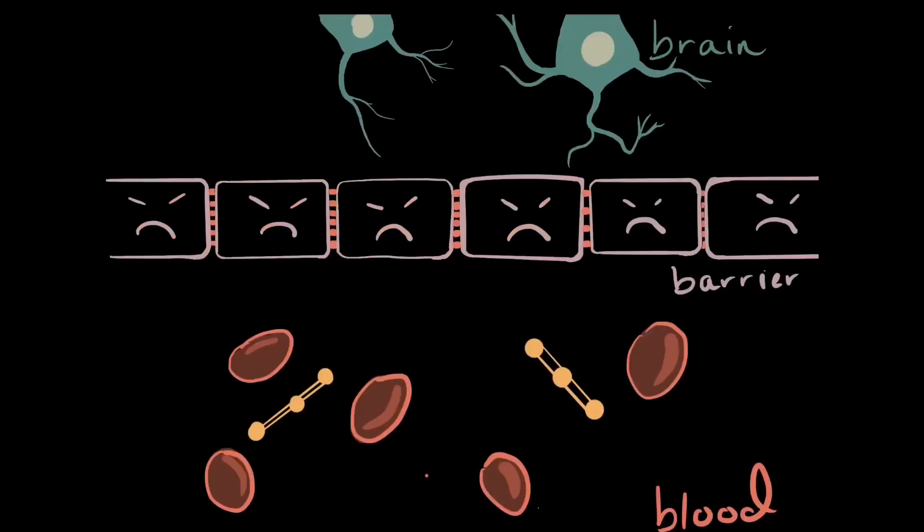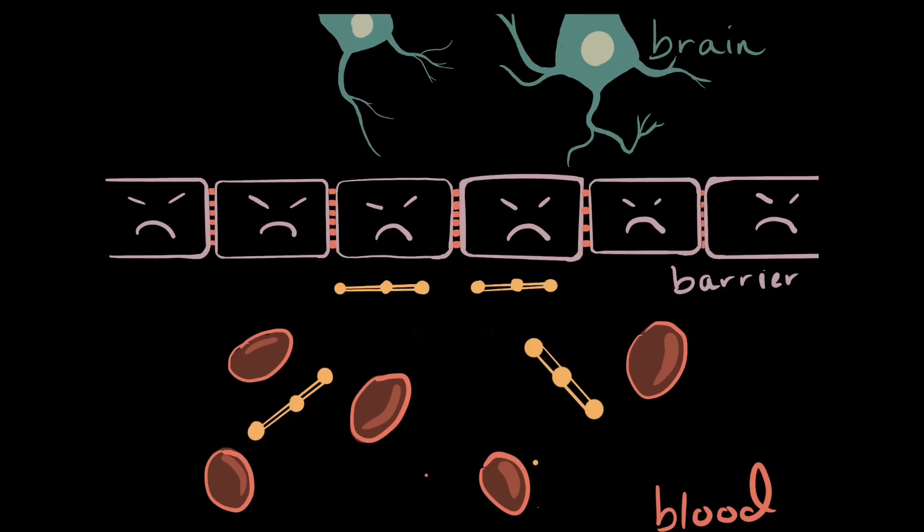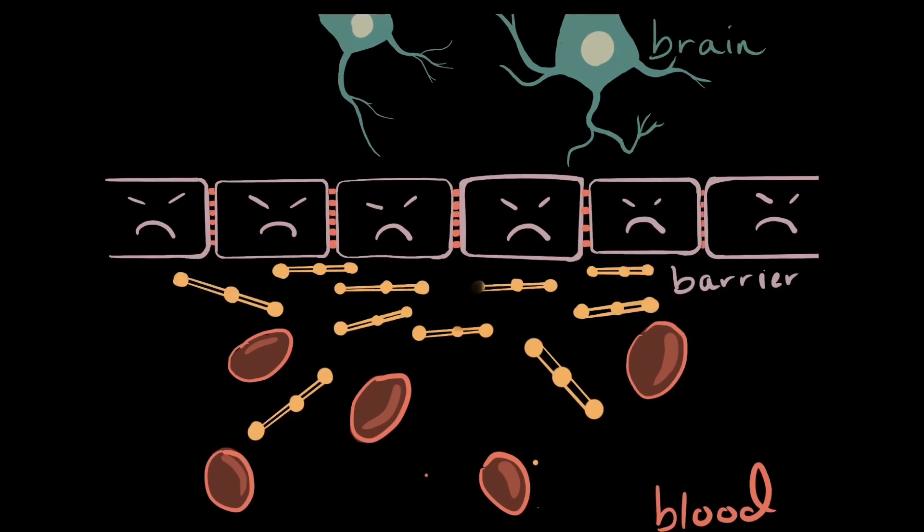Fibrin shouldn't even be in the brain. It's meant to be filtered out by the blood-brain barrier, but it can accumulate and end up weakening the barrier, squeezing past the cells that make up the barrier walls and entering the brain, causing all sorts of havoc.